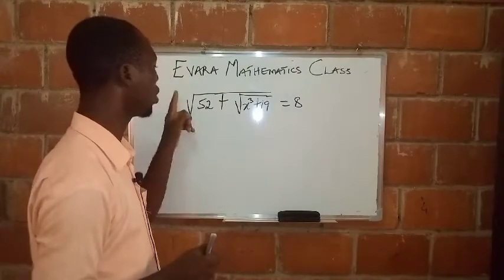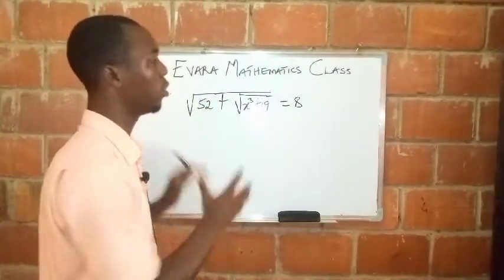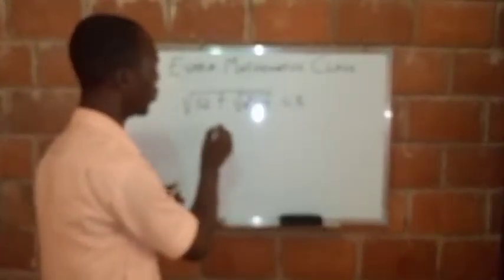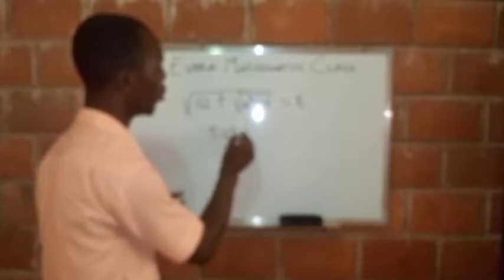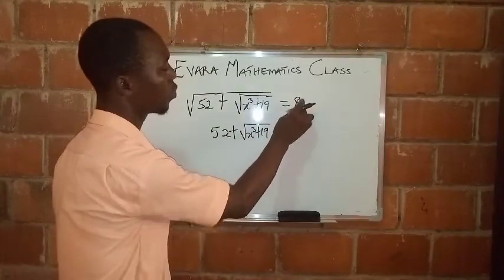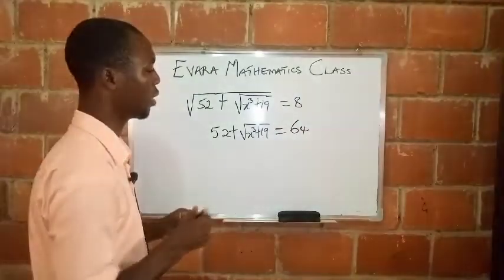First of all, to get rid of this square root sign, we will square both sides. So if we square both sides, that square will cancel out this square root. We will now be left with 52 plus x cubed plus 19. The square of 8 is 64. So we have squared both sides now.